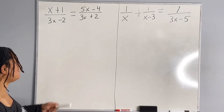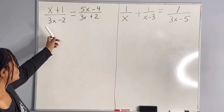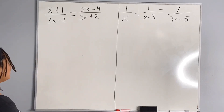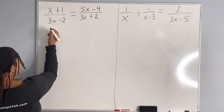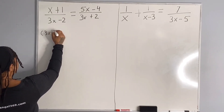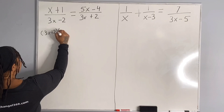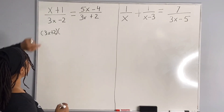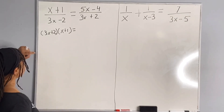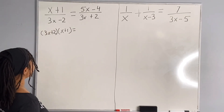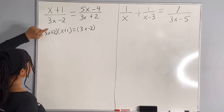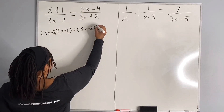The least common denominator will be the two denominators multiplied together. So I am going to take 3x plus 2, which is over here, and multiply it by x plus 1. And then I am going to take 3x minus 2 and multiply it by 5x minus 4.